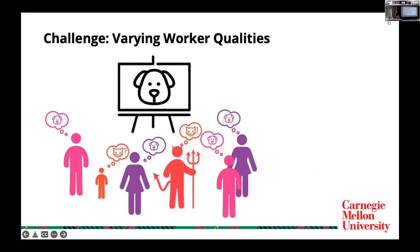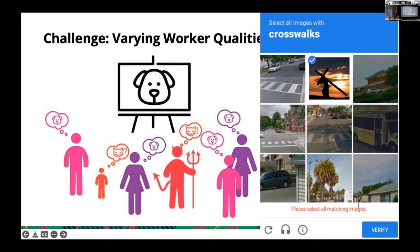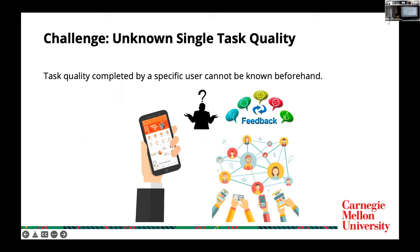One challenge is that the qualities of different workers might vary greatly. For example, in an image recognition task where the true label for an image is a dog, some workers might correctly recognize it but some others might not — especially people who repeatedly enter wrong answers. Another challenge is that the task quality completed by a specific worker cannot be known beforehand, and thus we have to assign a task to a worker first and then observe the task quality that this worker can generate.